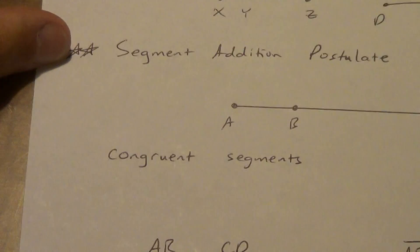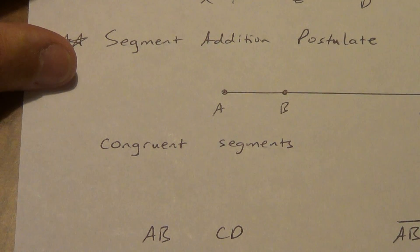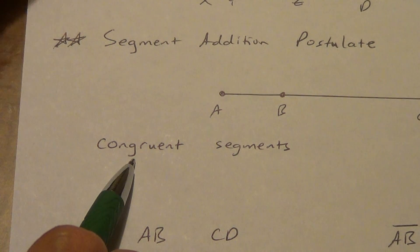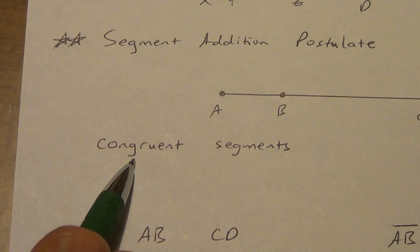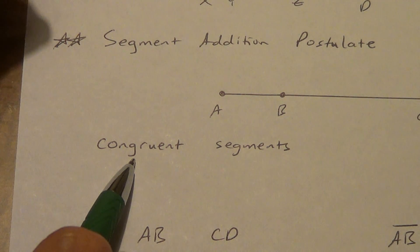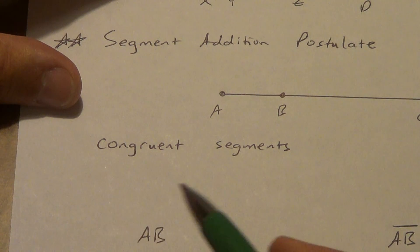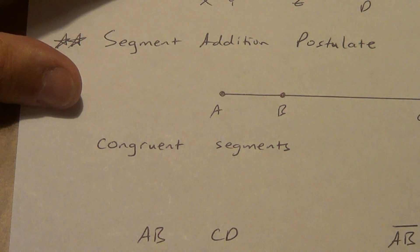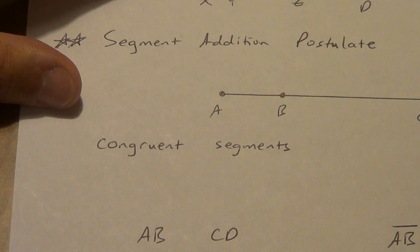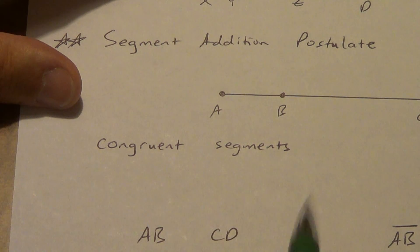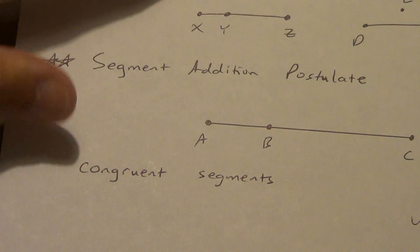Next term: congruent segments. You've probably heard 'congruent' before — it means same size, same shape. Segments can't really ever be a different shape, so the question is whether they are the same size. Congruent segments are segments that have the same length. A segment is one-dimensional, so it only has a length.